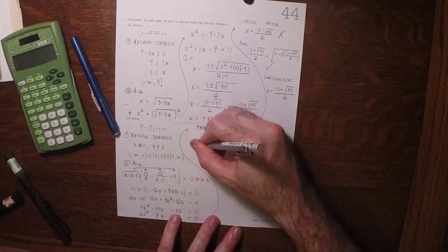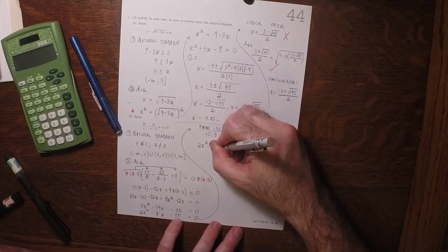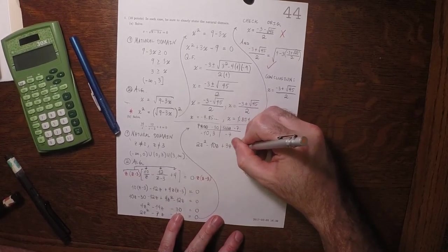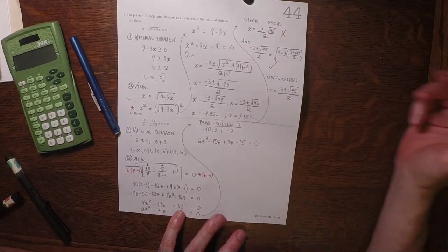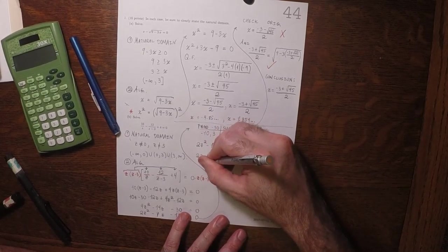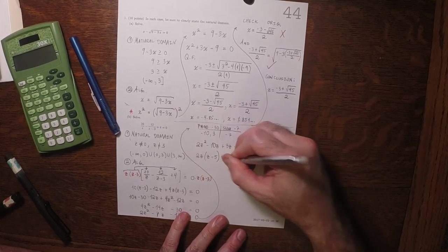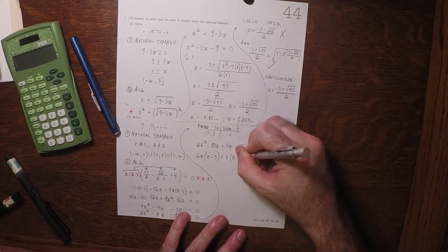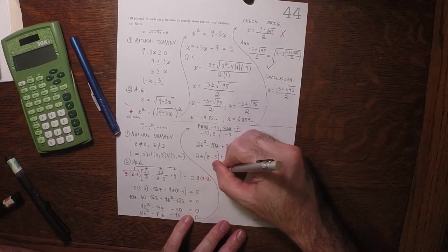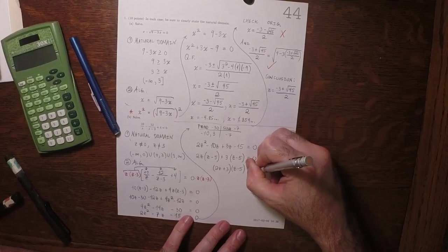Then we can take this 2z squared minus 10z plus 3z minus 15 is equal to 0. And then in each pair we can factor out the greatest common factor. That would be 2z and then z minus 5 plus 3 times z minus 5. So the factorization is 2z plus 3 times z minus 5 equals 0.